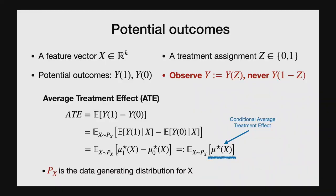To write down the counterfactual states of the world, I'm going to use the potential outcomes framework. I'll use X to denote my features and covariates, Z to denote the observed treatment assignment (a binary variable), and Y1 and Y0 to denote the potential outcomes. The important point is that you only get to observe Y1 if Z equals 1 — if this person was treated — and Y0 if Z equals 0. In particular, you never observe the counterfactual outcome. This is also known as bandit feedback in certain circles.